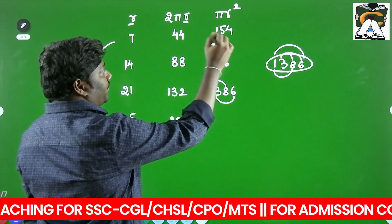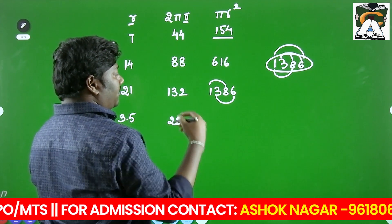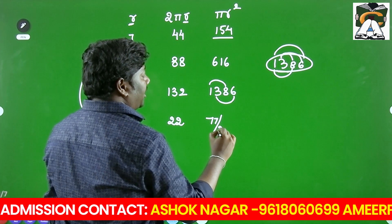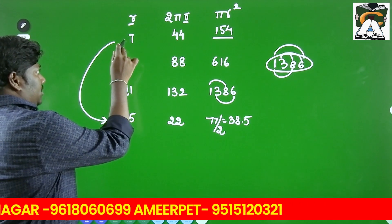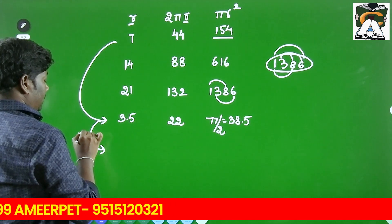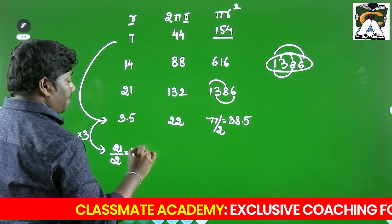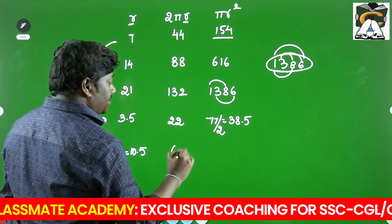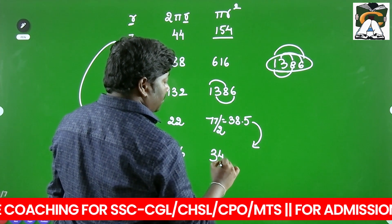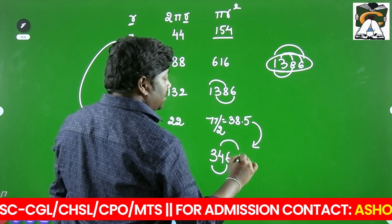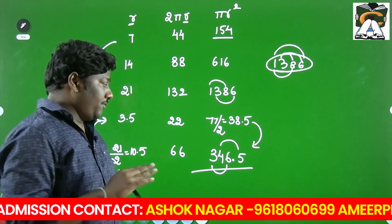If the radius is halved, the area becomes 1/4 of 154, which is 38.5. If you want radius 10.5 (that is 21/2), triple the half-radius values: circumference becomes 66, and the area becomes 9 times 38.5, which is 346.5. You can remember 346.5 because 3+6=9 and 4+5=9.